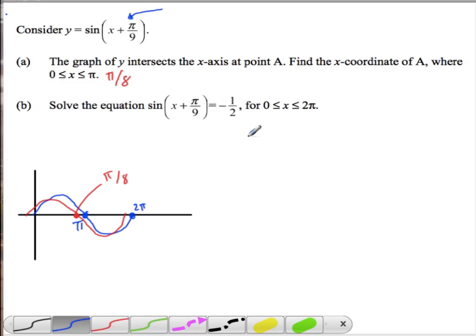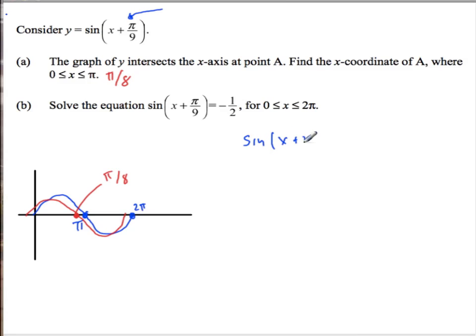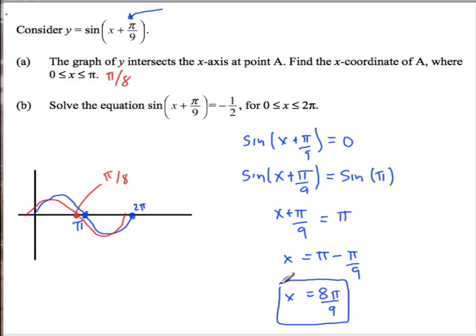And then the algebraic way, we can go sine x plus pi over 9 equals 0. Sine x plus pi over 9 equals, and I like to create a sine out of 0, so sine of pi, and then I can get rid of the sines. Take sine inverse of both sides, and I'm left with that. And then x equals pi minus pi over 9. So x equals 9 pi over 9 minus 1 pi over 9 is 8 pi over 9. That's the algebra way.